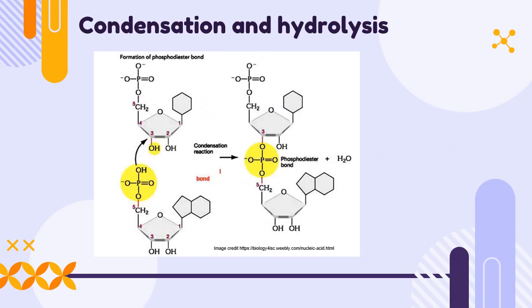When we make dinucleotides and bind nucleotides together to make polymers, it's a condensation reaction. We take a hydrogen off the phosphate group and a hydroxyl OH off the pentose sugar. These combine to make water, two H's and an O.